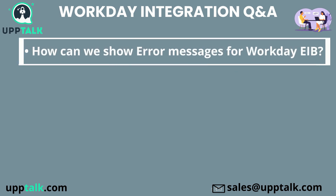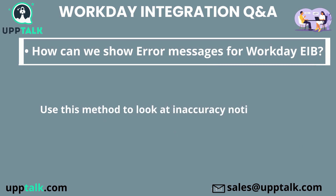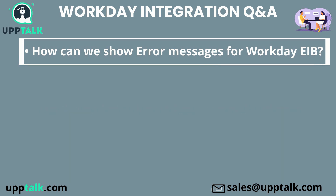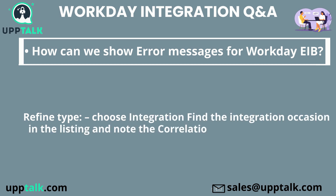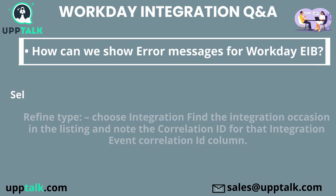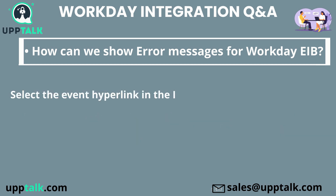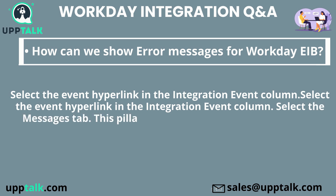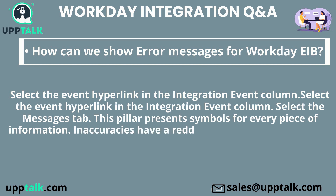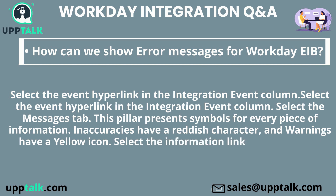How can we show error messages for Workday EIB? Use this method to look at error notifications for EIB: refine type, choose integration, find the integration event in the listing and note the correlation ID. Select the event hyperlink in the integration event column, then select the messages tab. This tab presents symbols for every piece of information — errors have a red icon and warnings have a yellow icon. Select the information link in the message column.